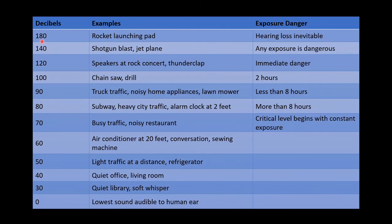Decibels are the unit we use to measure the psychological loudness of a sound. Zero decibels is the lowest sound audible to a human ear. About 30 decibels is a quiet, soft whisper; 70 is busy traffic or a noisy restaurant, where constant exposure can cause some danger. Exposure to chainsaws or drills for about two hours without hearing protection can cause damage. Speakers at a rock concert at 120 decibels or a thunderclap can cause immediate danger, and a rocket launchpad blast at 180 decibels causes immediate hearing loss.